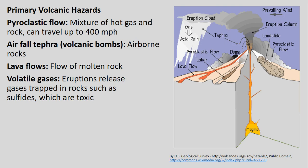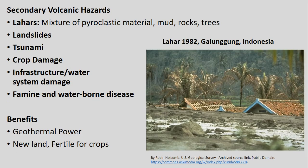These are primary volcanic hazards in the sense that they're immediately emitted by the volcano itself, compared to secondary volcanic hazards, which essentially are repercussions or consequences created by volcanoes. This includes things like lahars — essentially landslides that are mixtures of pyroclastic material emitted by volcanoes, mixed together with mud and rocks, all churned up together.